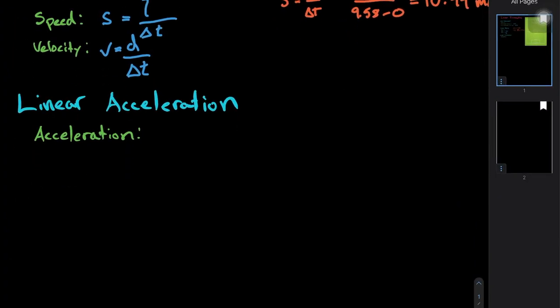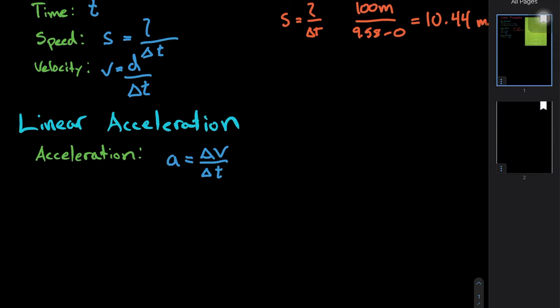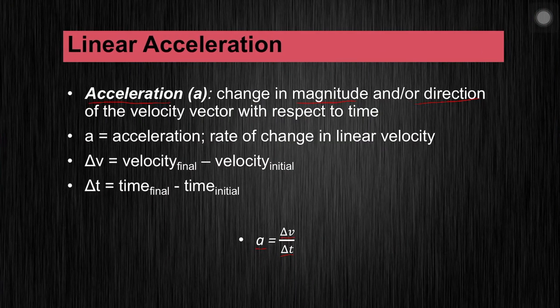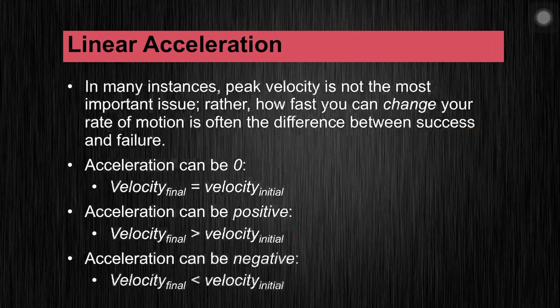To improve the agility capabilities of a team sport athlete like a soccer player, we might want to work on their ability to accelerate — because acceleration translates into cutting ability, weaving ability, and the ability to start and stop quickly. The acceleration equation is: a equals delta v over delta t, where delta v is the final velocity minus the initial velocity, and delta t is the final time minus the initial time. Peak velocity is often not the most important factor; how fast you can change your rate of motion is the difference between success and failure.